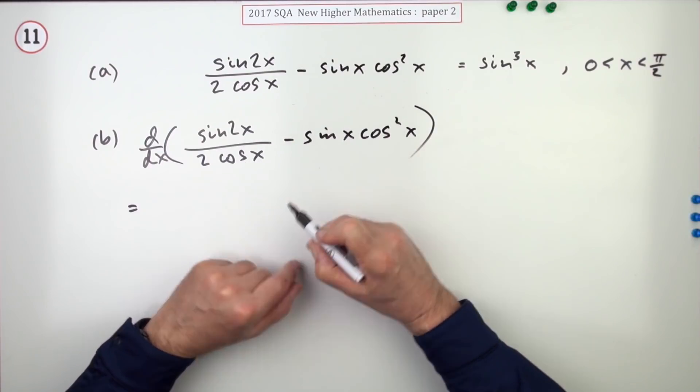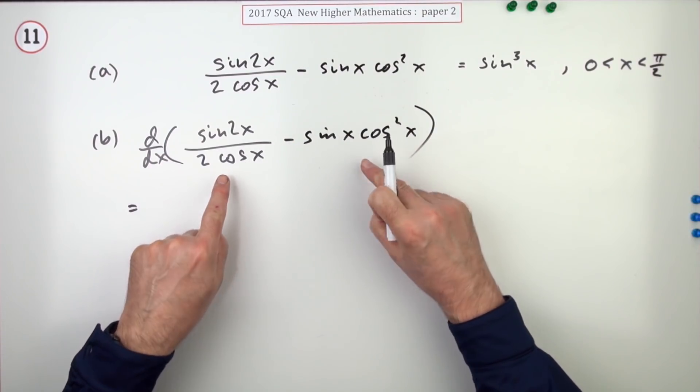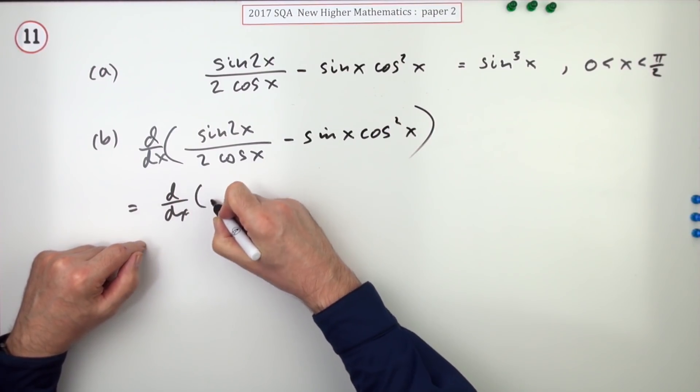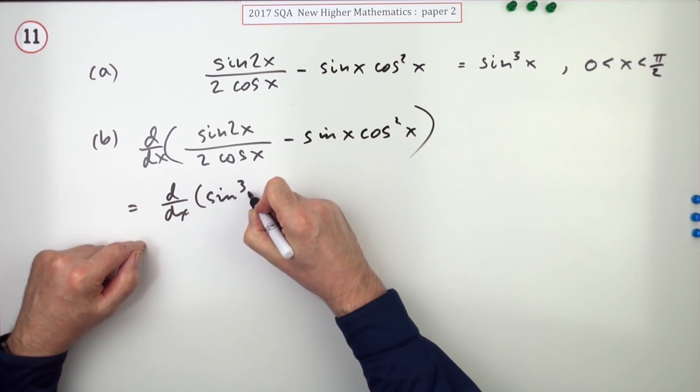Well obviously you can't differentiate that because you don't know how to differentiate a quotient or a product. But you know you don't need to because that is the same as this. So it's just going to be differentiate sine cubed x.